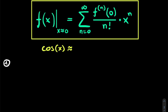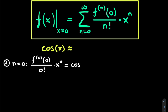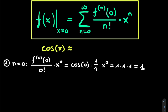Let's just take the first term as an example. We have that n is equal to 0. In this case, we have f⁰ of 0, so the zeroth derivative filled in at x is equal to 0, divided by 0 factorial multiplied by x to the power of 0. Now we know that the zeroth derivative of a function is simply the function itself. So here we get the cosine of 0 multiplied by 1 over 0 factorial, which is simply 1, multiplied by x to the power of 0, which is also 1. We know that the cosine of 0 is equal to 1, so we get 1 multiplied by 1 multiplied by 1. And the first term in our Taylor expansion is simply 1.